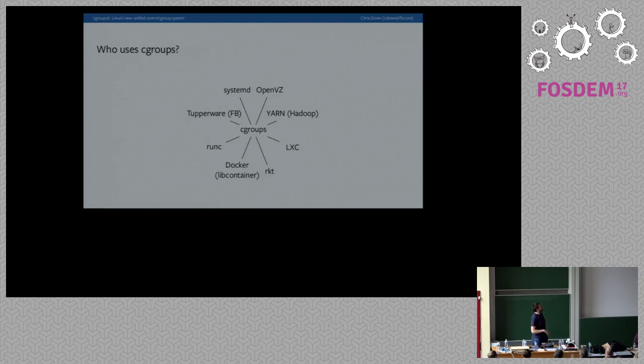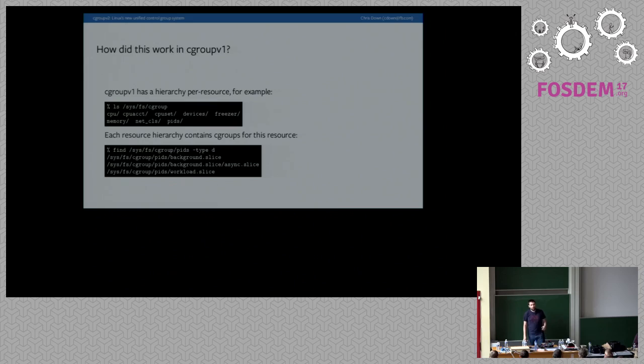You might ask, my favorite application already does this — why should I care about cgroups? Well, if you've been using any kind of software in the last eight years, it almost certainly does it through cgroups. It probably does it transparently and you don't ever have to talk to cgroups directly. But the backing for all of these is cgroups — that's how they do resource limiting.